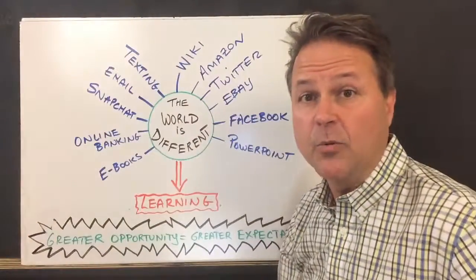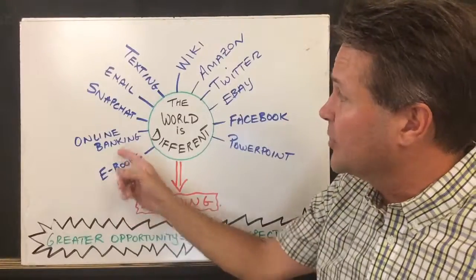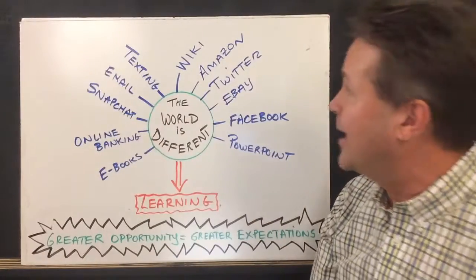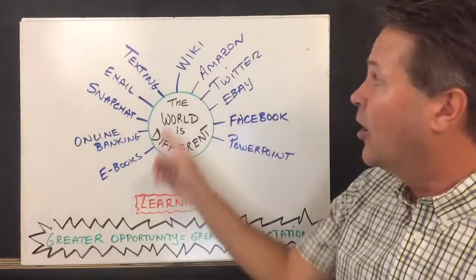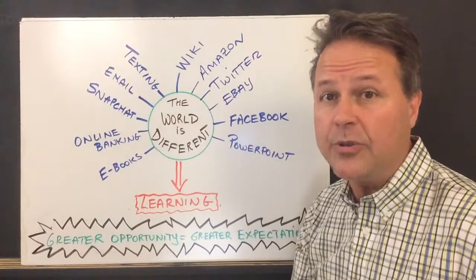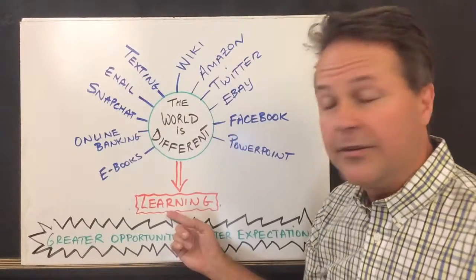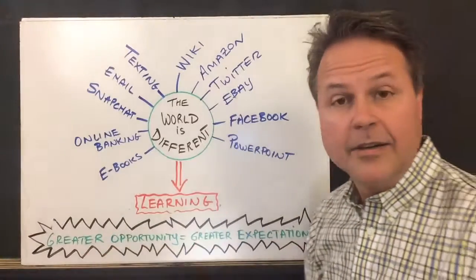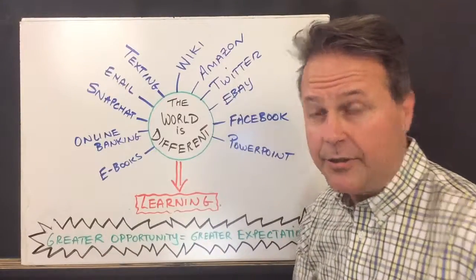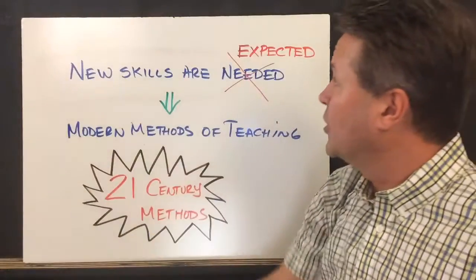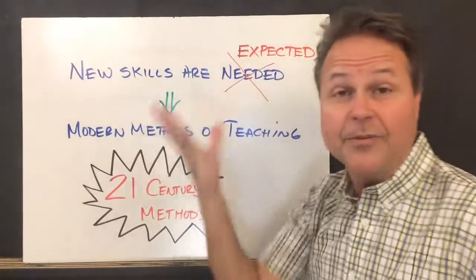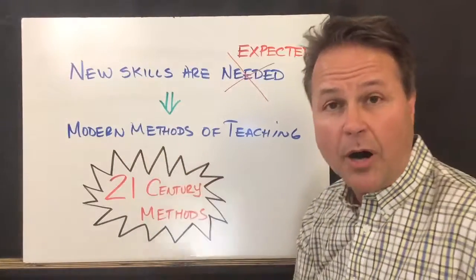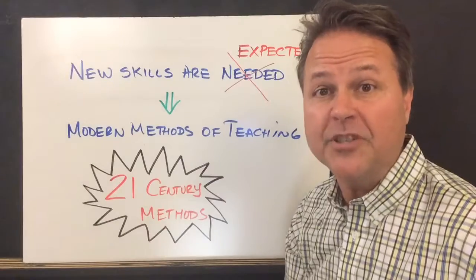Well, the world has changed. We're different now. We have e-books, online banking, eBay, texting, email, PowerPoint, Facebook, Snapchat, Twitter, Amazon, Wikipedia — all sorts of sources of information. We do things differently now. So that must mean we have to take a different approach to learning. Greater opportunities result in greater expectations. New skills are needed — in fact, they expect those new skills. So that means we need to use modern methods of teaching: 21st century skills.